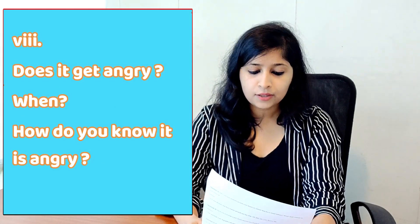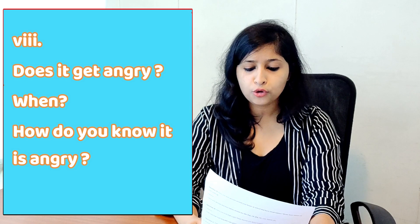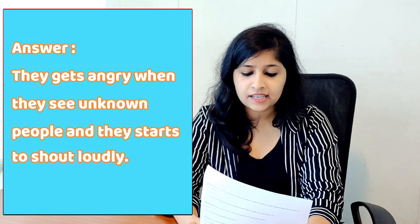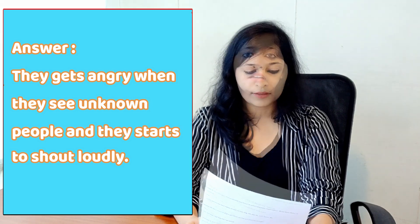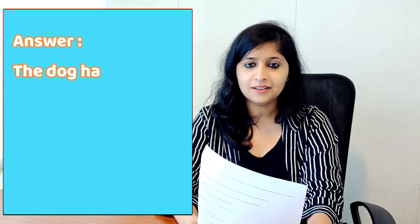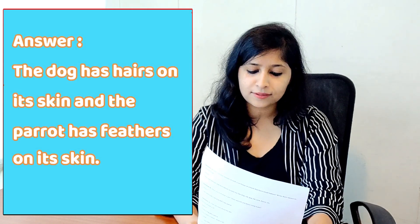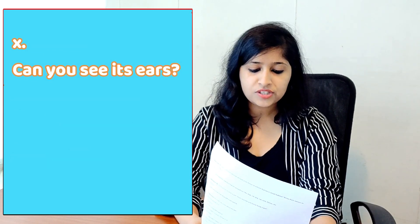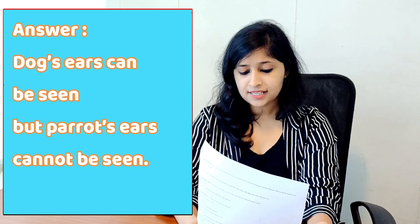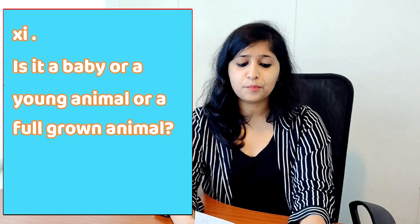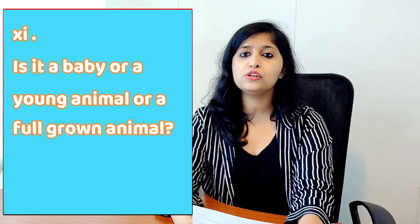Eighth part: does it get angry? When? How do you know it is angry? Answer: They get angry when they see unknown people and they start to shout loudly. Ninth part: does it have hair or feathers on its skin? Answer: The dog has hair on its skin and the parrot has feathers on its skin. Tenth part: can you see its ears? Answer: The dog's ears can be seen but the parrot's ears cannot be seen. Eleventh part: is it a baby, a young animal, or a full grown animal? Answer: They both are young animals.